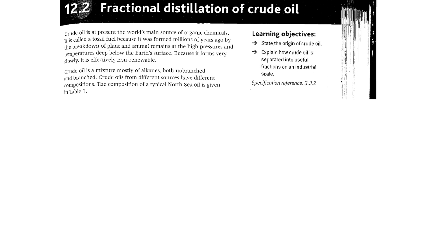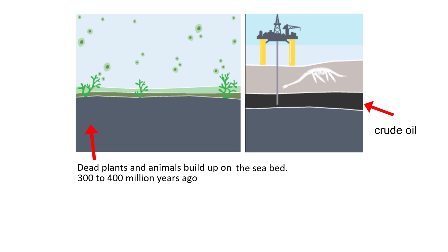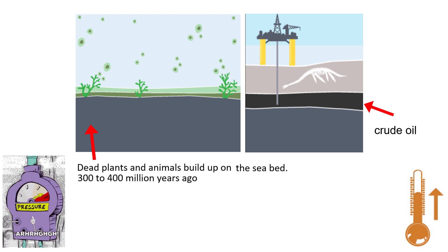We're starting from the beginning. Crude oil is a mixture mostly of alkanes, both branched and unbranched. On page 193 we have learning objectives. State the origin of crude oil. Crude oil was formed millions of years ago by the breakdown of plant and animal remains at high pressure and temperature deep below the earth's surface.